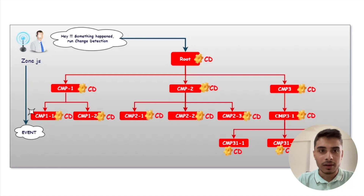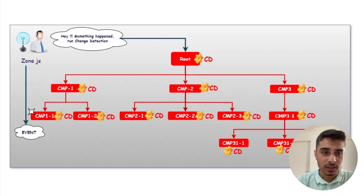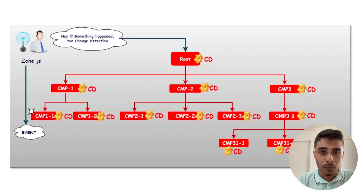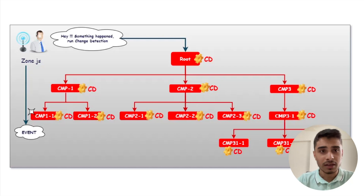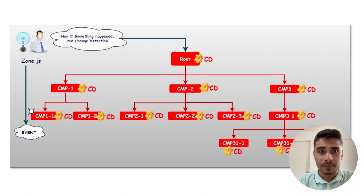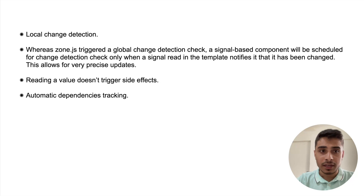When any data changes, a component tells Zone.js something has happened, and Zone.js runs change detection — a way to update all shared data and let all components know they need to re-render. The problem is that even when a component is not directly dependent on a particular event or data, it still causes event propagation that updates all components. This is not good in terms of performance — it causes unnecessary extra computation. You can improve this by customizing the change detection strategy to OnPush, but a developer has to do that explicitly.